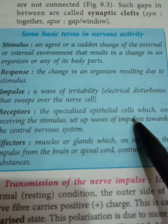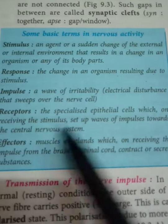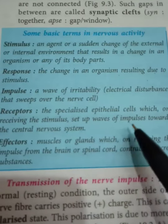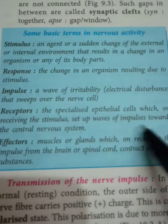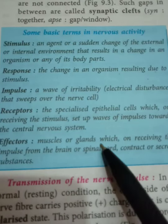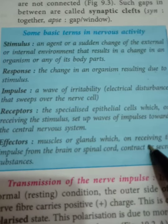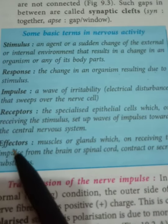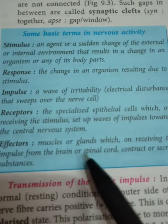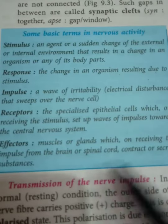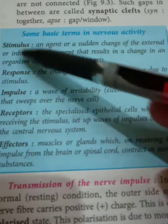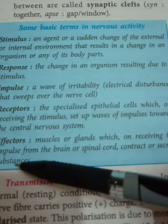Receptors are the specialized epithelial cells which, on receiving the stimulus, set a wave of impulses towards the central nervous system. Effectors are the muscles or glands which, on receiving an impulse from the brain, contract or secrete substances. All these definitions you need to learn.